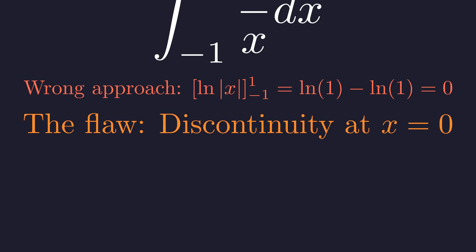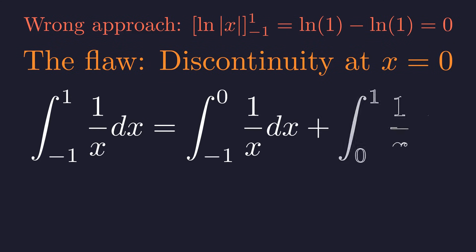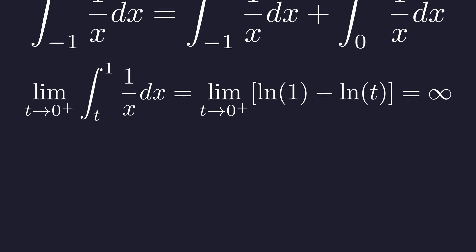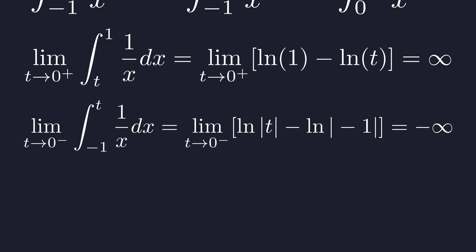The fatal flaw is that the function has an infinite discontinuity at x equals zero, right in our interval. We must split the integral at the point of discontinuity. The integral from the right diverges to positive infinity, and the integral from the left diverges to negative infinity. Since at least one part diverges, the entire integral does not exist.